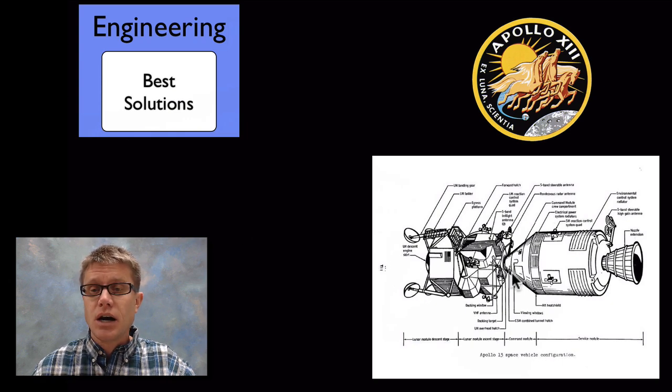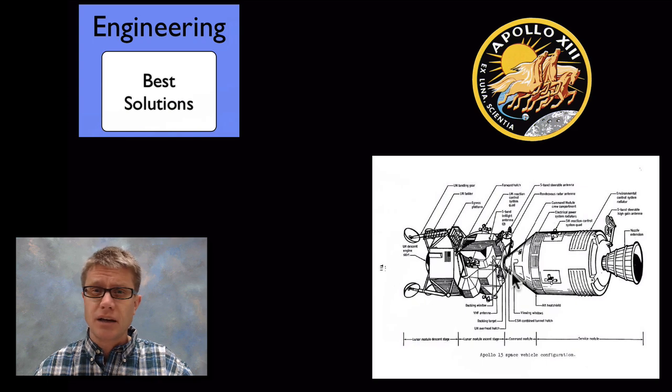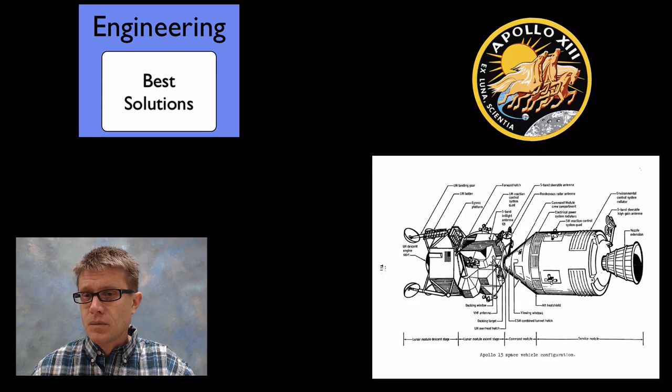Okay Houston, we've had a problem here. This is Houston. Say again please. Houston, we've had a problem. We've had a main B plus undervolt. Roger, main B undervolt. Okay, stand by at 13. We're looking at it.